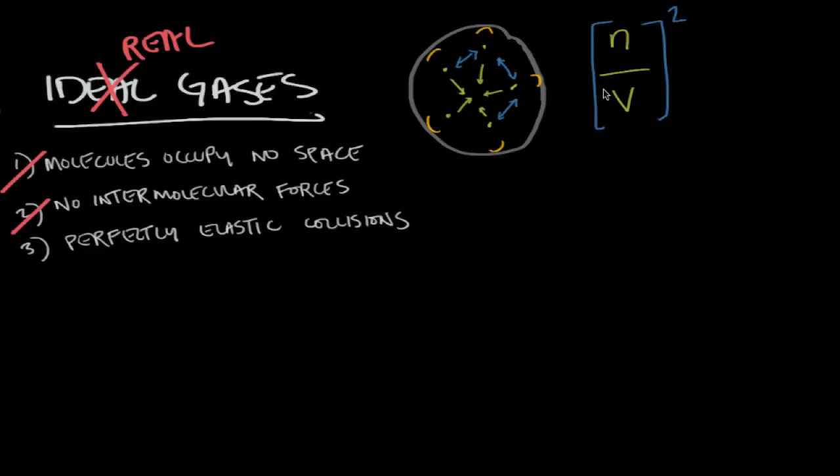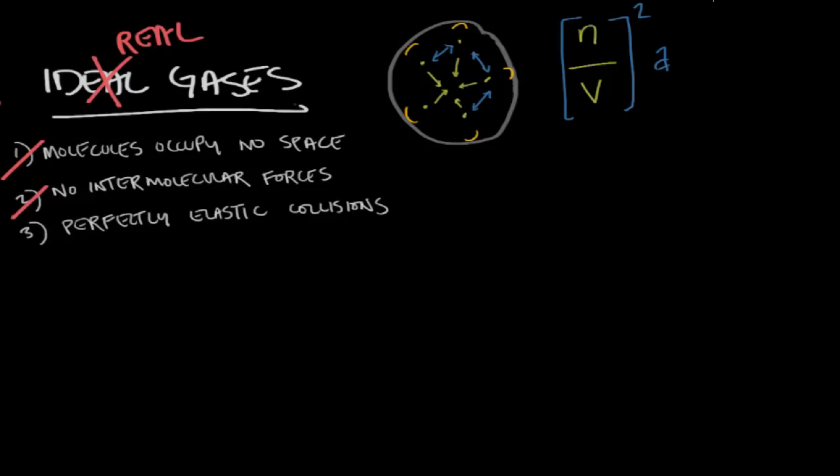So each gas has a different intrinsic factor that we need to consider. And we call that a. And we can think of a as the attraction coefficient. But it's usually a value that's given to us in a table because it's unique for the gases that we're dealing with. So putting these thoughts together we find that the P ideal, the pressure ideal, is actually equal to the pressure observed plus this consideration of the attraction coefficient times the concentration of these particles squared.